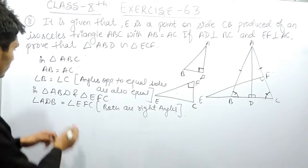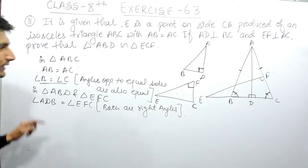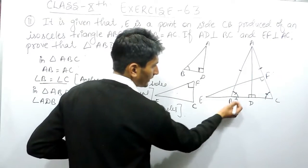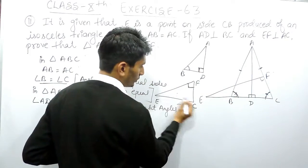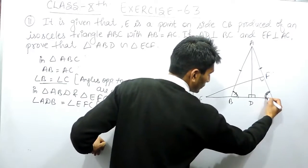And angle B is equal to angle C. So angle B, which is this one, is equal to angle C. This one, this angle and this angle are equal.